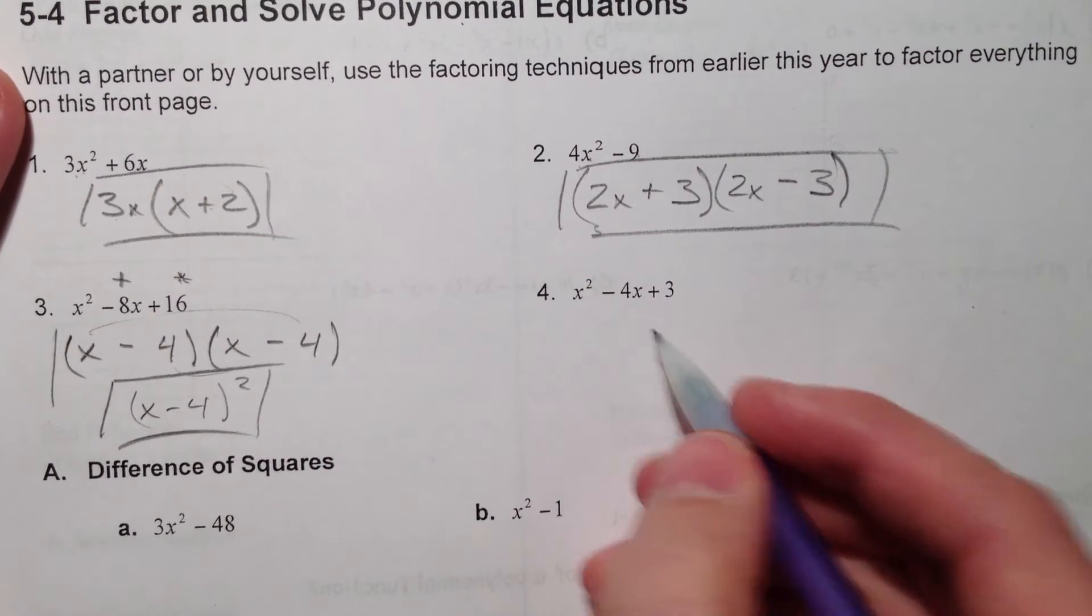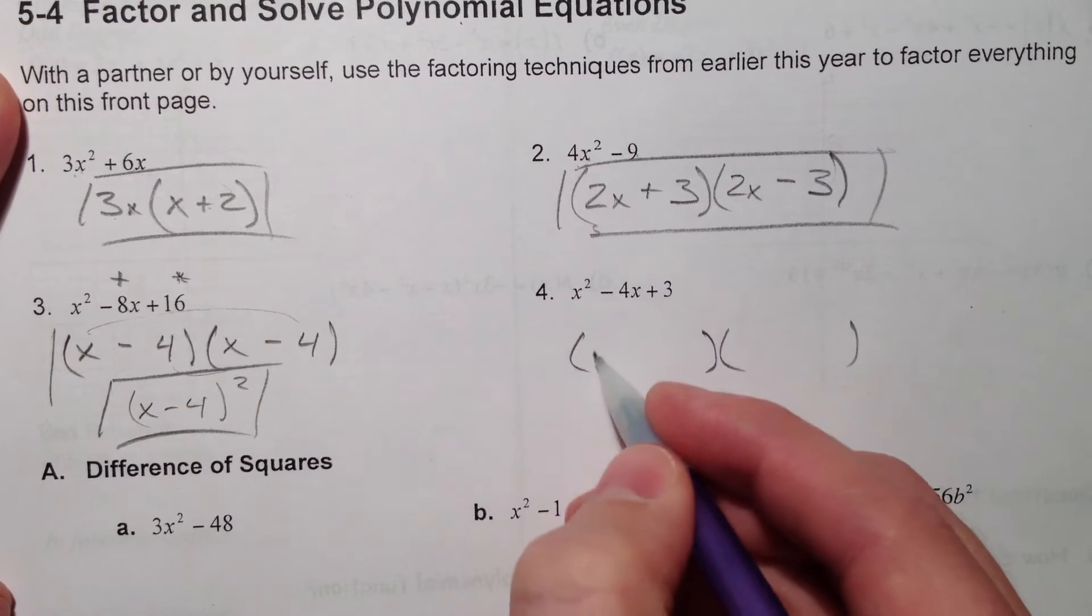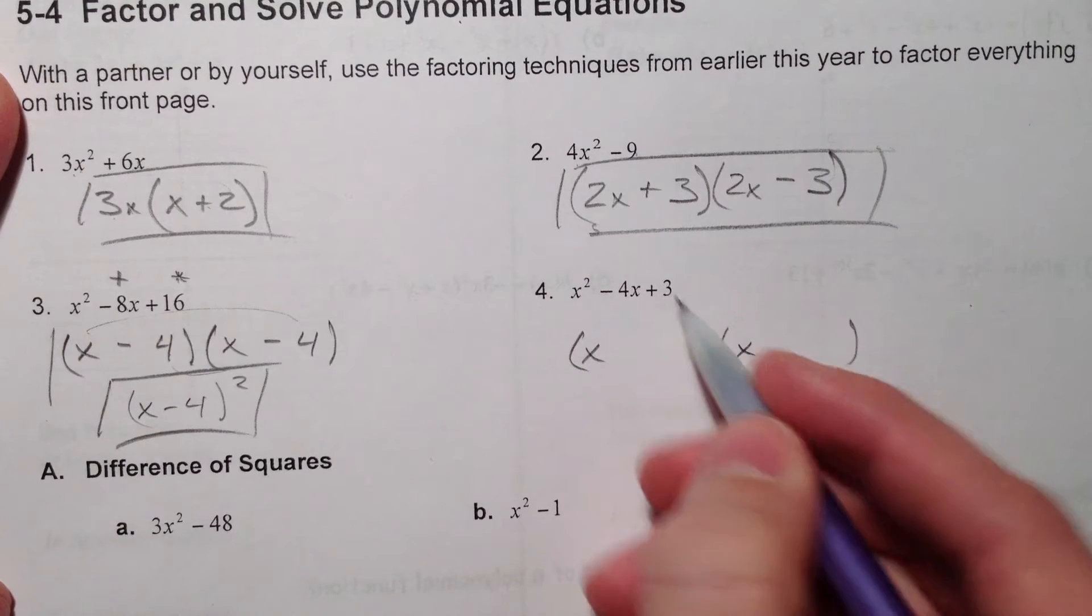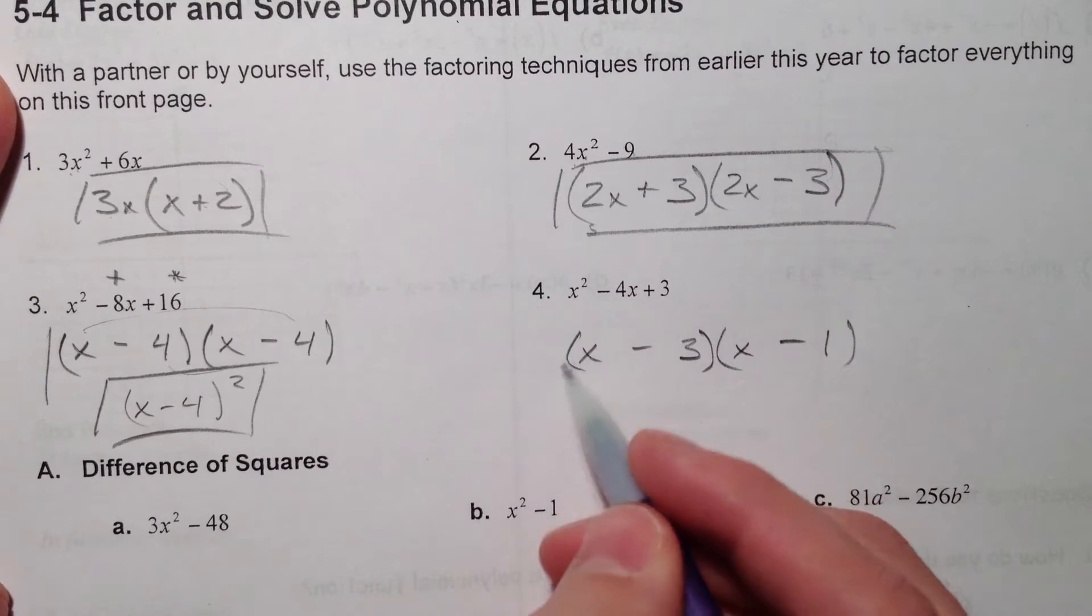And lastly, one where they're different: x and x, and 3 and 1. It's got to be 3 and 1, so minus 3, minus 1.